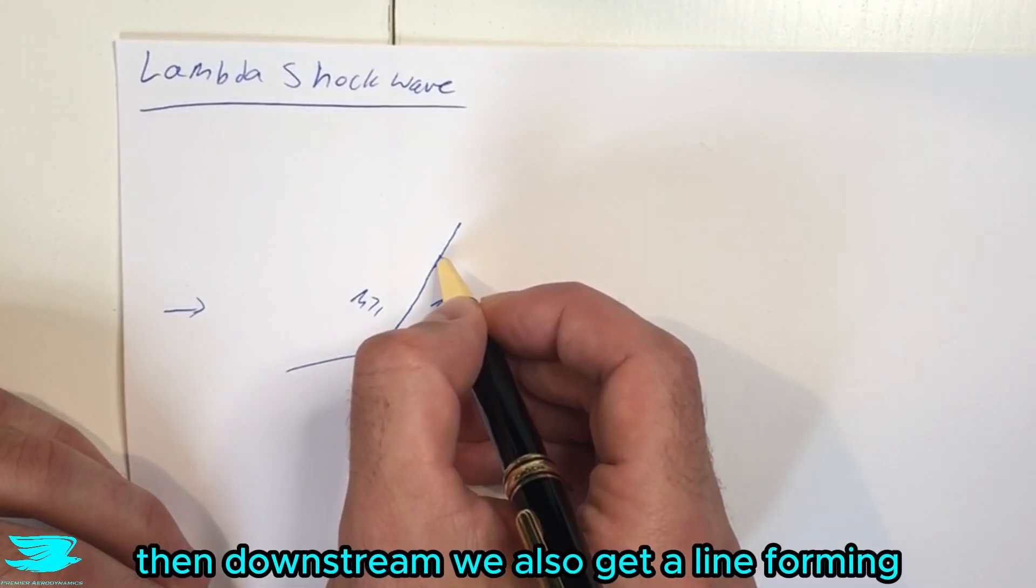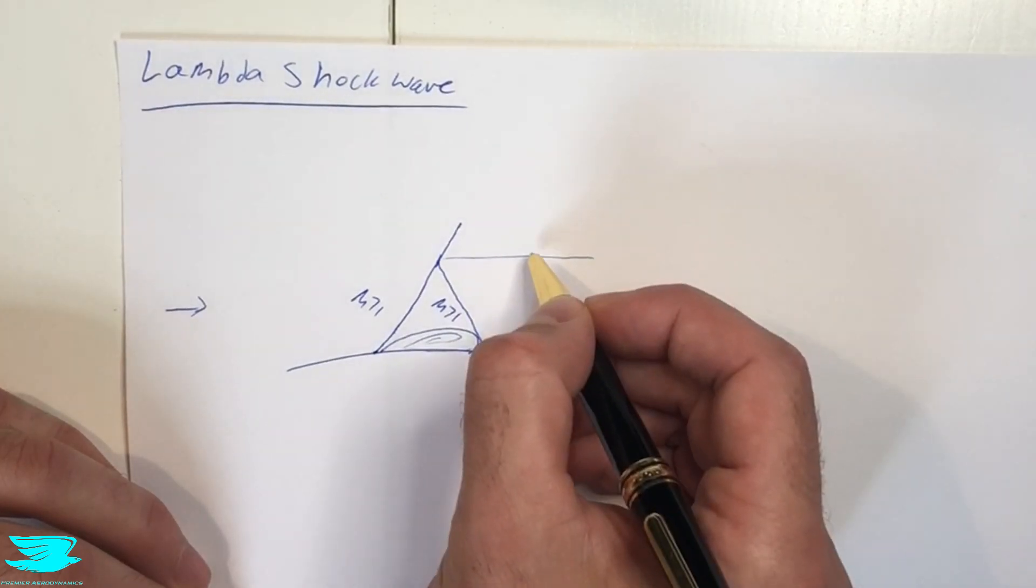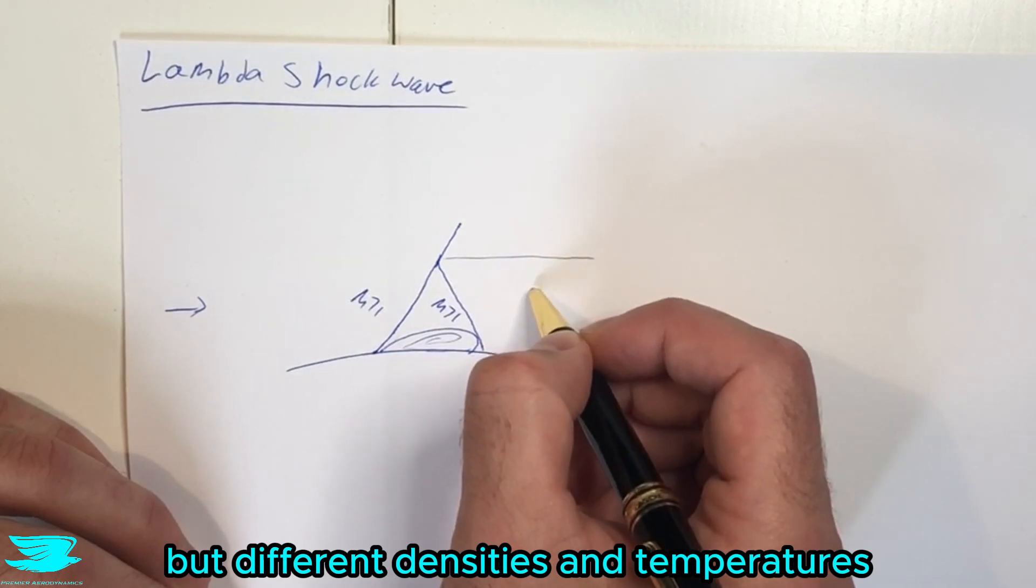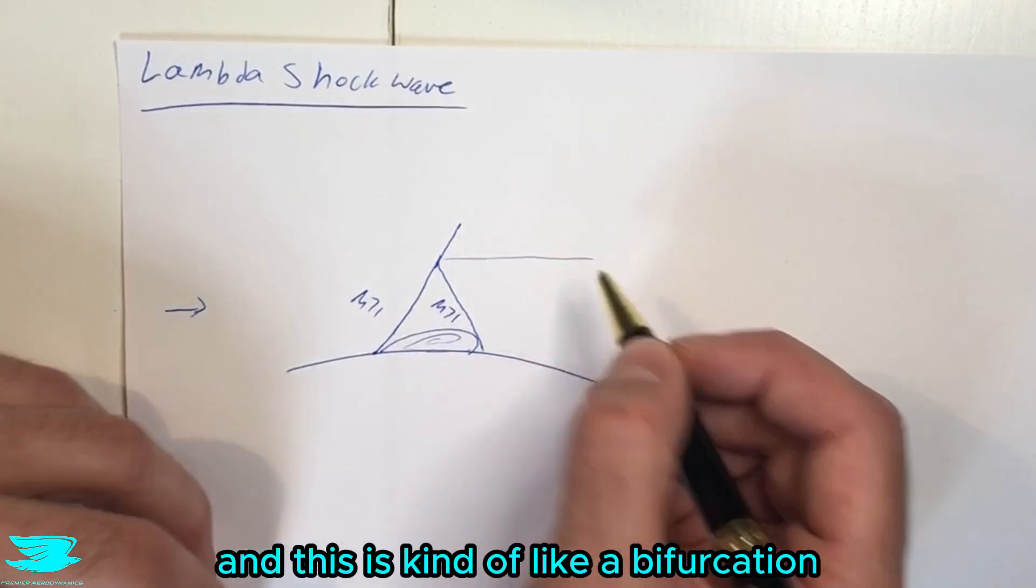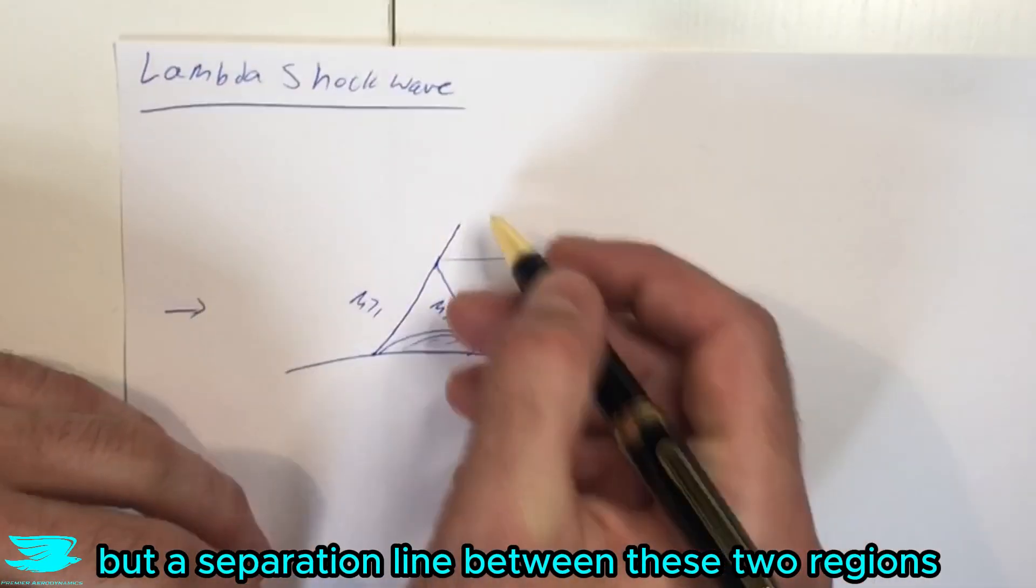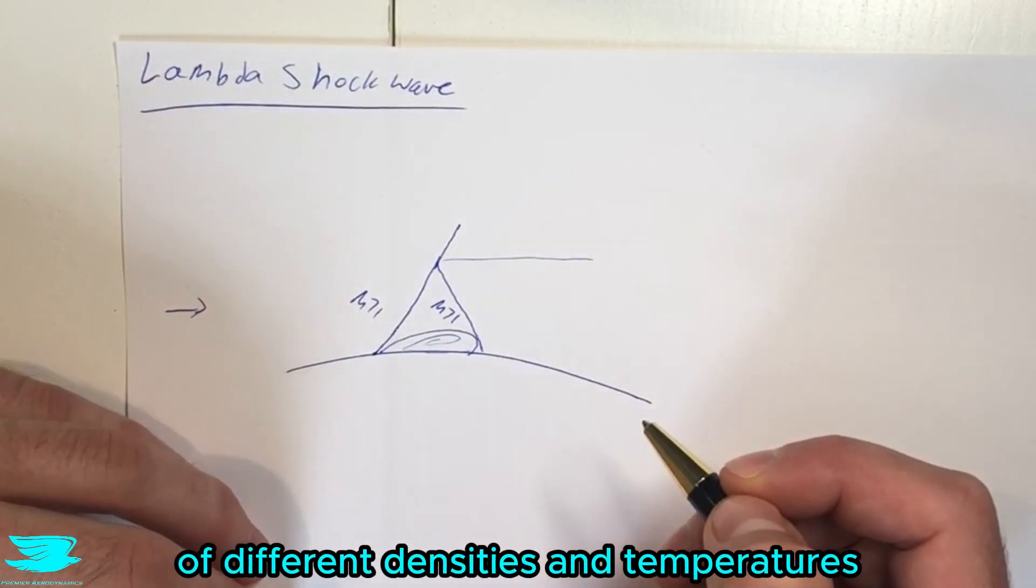Then downstream, we also get a line forming where we have pressure along this, across this face the same, but different densities and temperatures. And this is kind of like a bifurcation, well not really a bifurcation line, but a separation line between these two regions of different densities and temperatures.